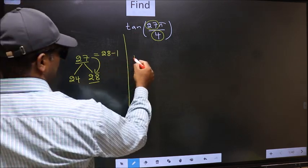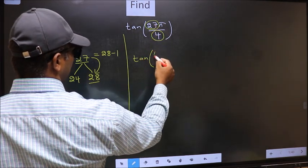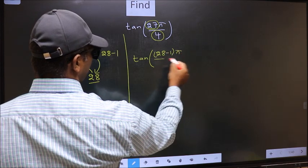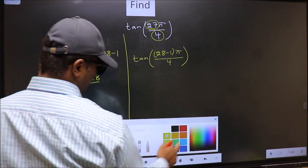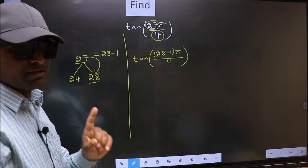So, this will become tan. In place of 27, now we should write 28 minus 1 pi by 4. This is your step 1.